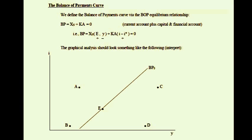An increase in domestic income leads to more imports. The negative correlation between net exports and income occurs because imports increase ceteris paribus, worsening the trade balance — net exports decline when income increases. The capital and financial account is dependent on the spread between domestic and foreign interest rates. Ceteris paribus, a higher domestic interest rate brings more foreign money into the domestic economy and improves the capital account.